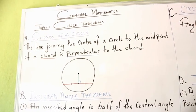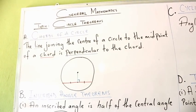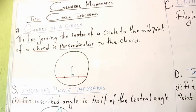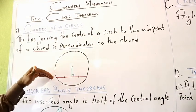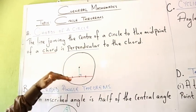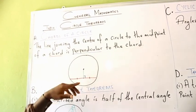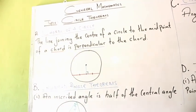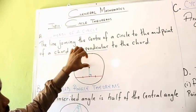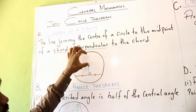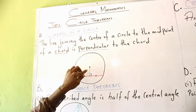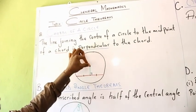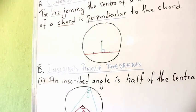We are going to look at the first theorem, which has to do with the chord of a circle. A chord is a straight line that divides a circle into two segments. The red line here is a chord, the black dot represents the center of the circle, and the green line represents a line drawn from the center to the midpoint of the chord.